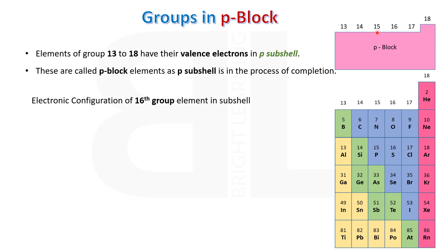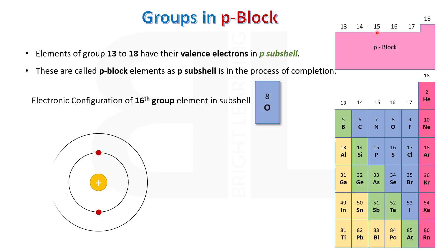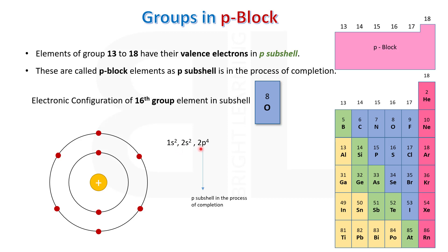If we write the configuration of a 16th group element — oxygen belongs to the 16th group with atomic number 8 — 16th group also lies in P block. Oxygen has 2 electrons in K shell and 6 electrons in L shell. Its subshell configuration is 1s2, 2s2, 2p4. Only the P subshell is in the process of completion.